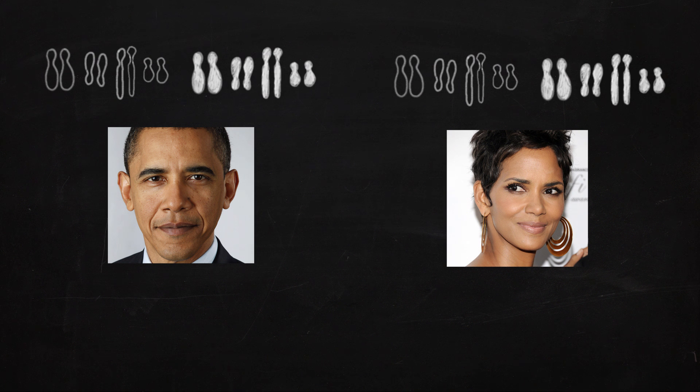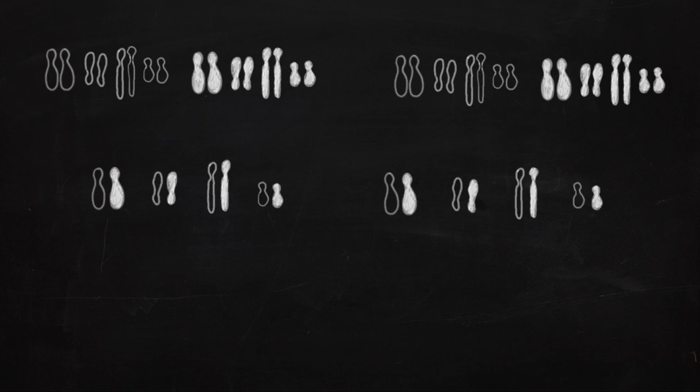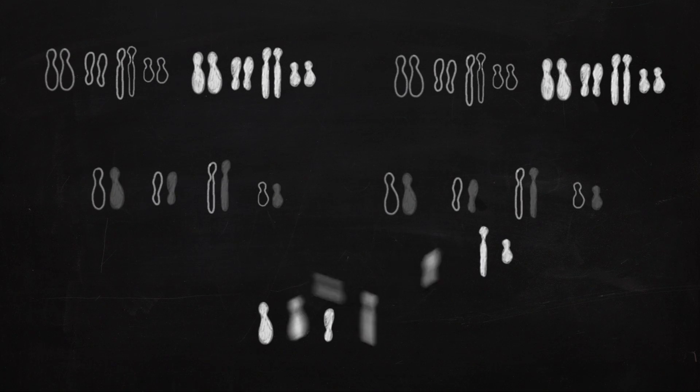So let's say Barack Obama made a baby with Halle Berry. They both have a parent of African descent and a parent of white people descent. There is a chance, although a very small chance, of them producing a sperm or an egg that only contains the chromosomes of one of their parents. If they each made one and they happened to come together, then they could produce an offspring of entirely African descent or vice versa an offspring of entirely white people descent.